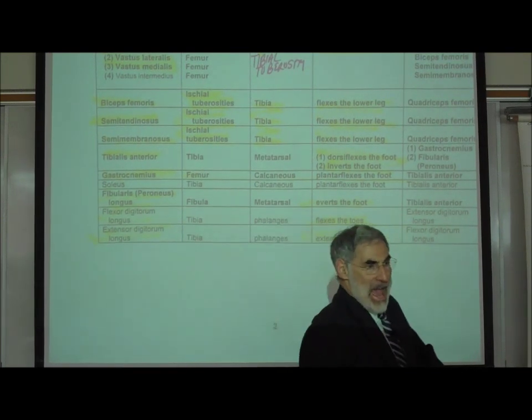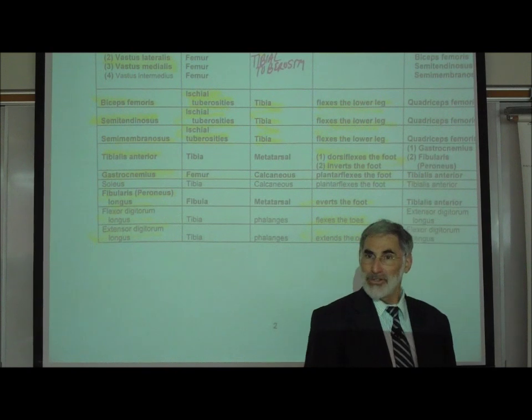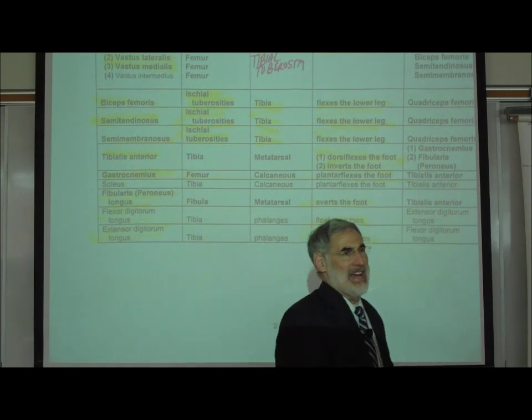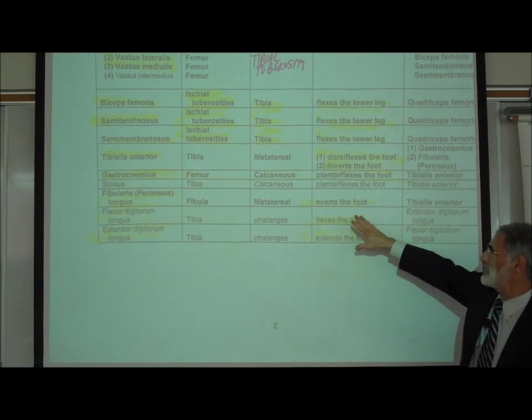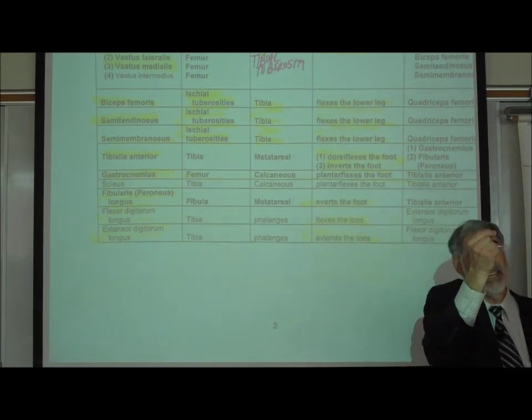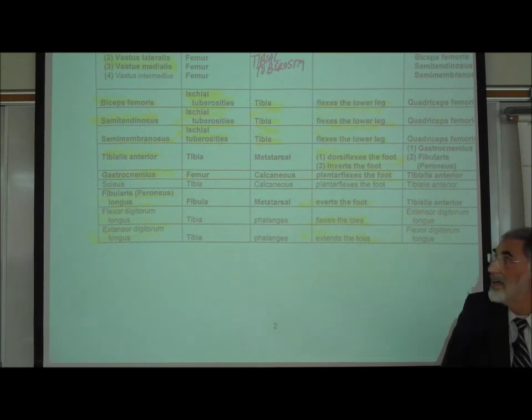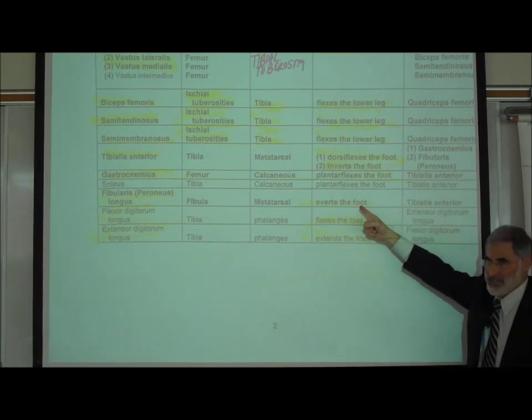The antagonists of the tibialis anterior are those two calf muscles. The big one on the back of your calf, the gastrocnemius, and right underneath it, the soleus. They both insert on the calcaneus bone, the heel bone, via the Achilles tendon. And they plantarflex the foot.